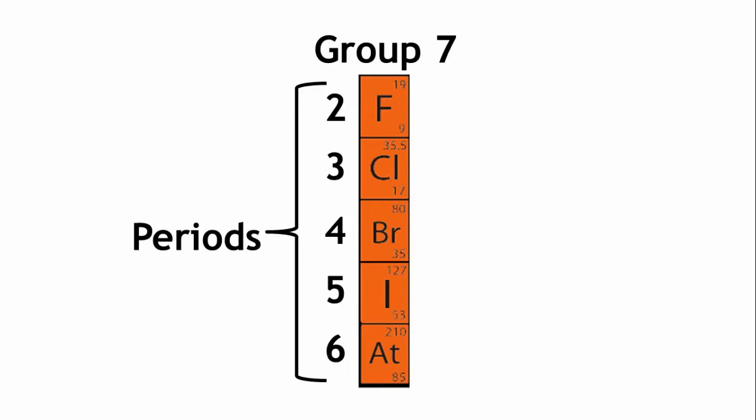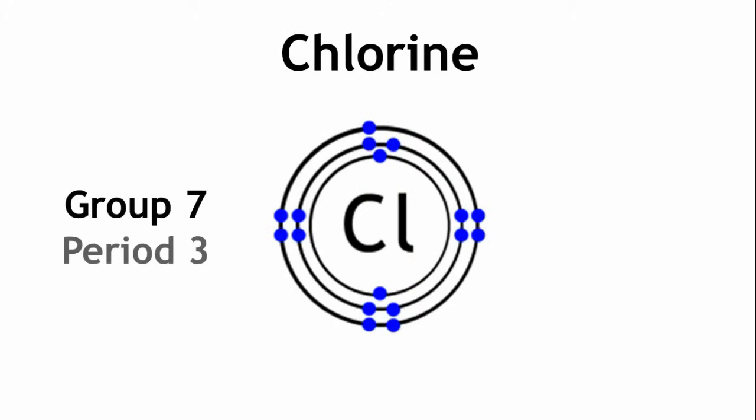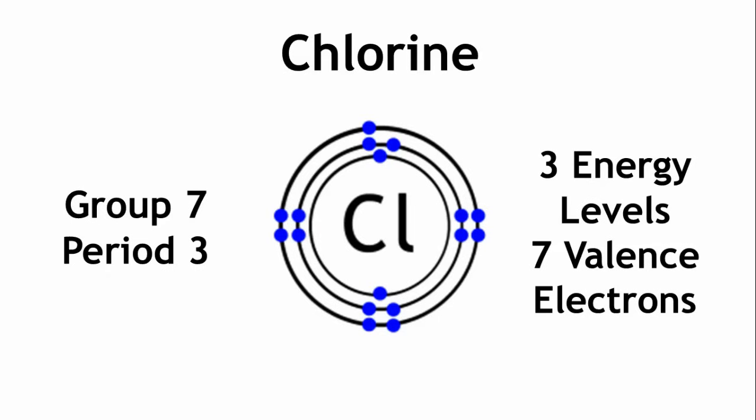So, chlorine is in group 7, period 3, therefore it has 3 energy levels, with 7 electrons in its outermost shell.